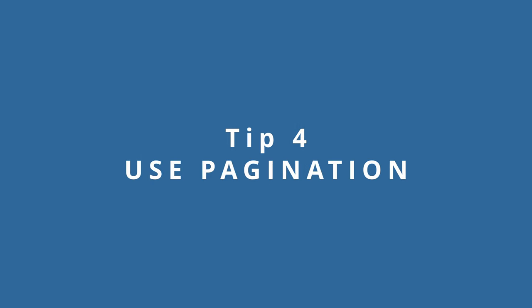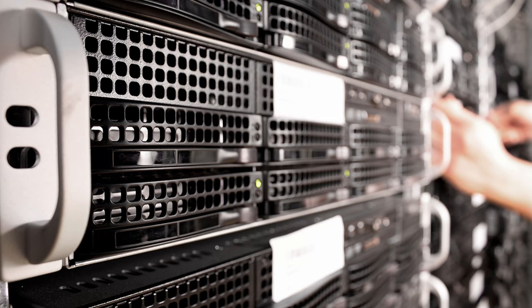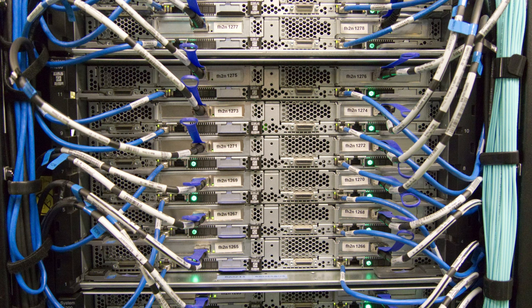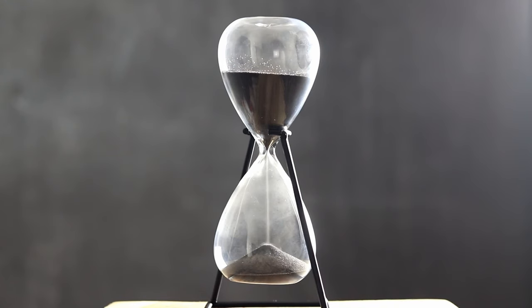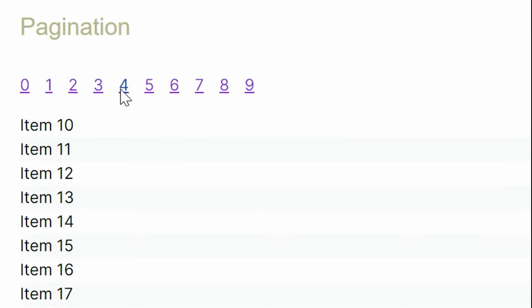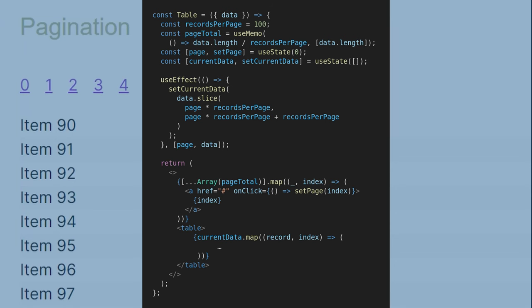Tip number four: use pagination. I know I said the API doesn't support pagination, but that only applies to server-side pagination. If you already got the data onto the browser in a timely manner, writing hundreds of thousands of records to the DOM will still take forever. So don't write everything. Front-end-only pagination is a thing and it's pretty easy to set up. You only need to calculate the number of pages your data will be displayed over and for each page display a subset of the data. Here's a look at the code you'll need to make this work.